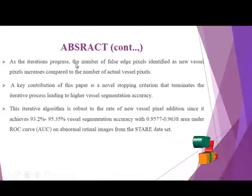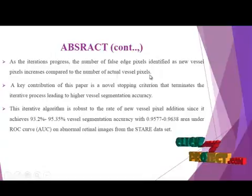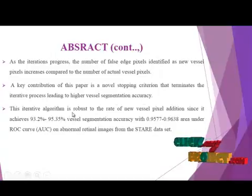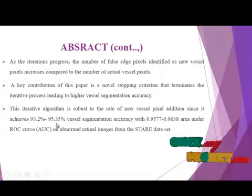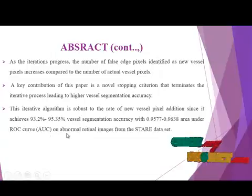As the iterative process continues, the number of false edge pixels identified as new vessel pixels increases compared to the number of actual vessel pixels. A key contribution of this paper is a normal stopping criterion that terminates the iterative process, leading to higher vessel segmentation accuracy. The iterative algorithm achieves 93.2% and 95.3% vessel segmentation accuracy of 0.9577 to 0.963, similar to the area under the ROC curve on abnormal retina images from the standard dataset.